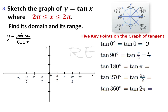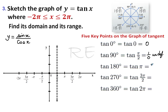Tangent of 90 degrees, or pi over two, is equal to sine pi over two — one over zero — which is undefined. We have an asymptote. Tangent pi is equal to sine pi, zero, over cosine pi, negative one, so tangent pi is zero.